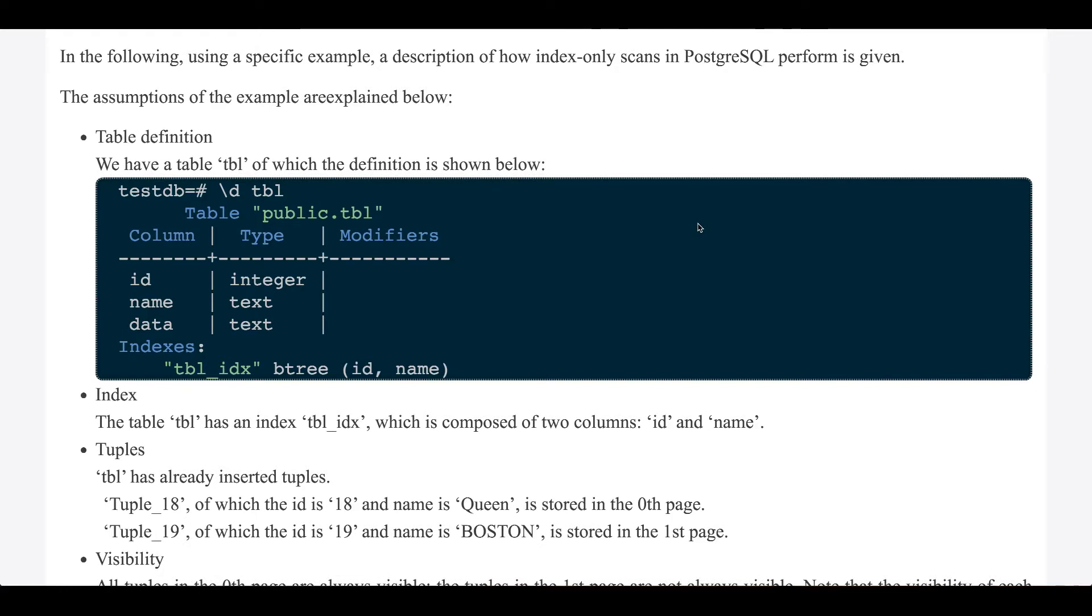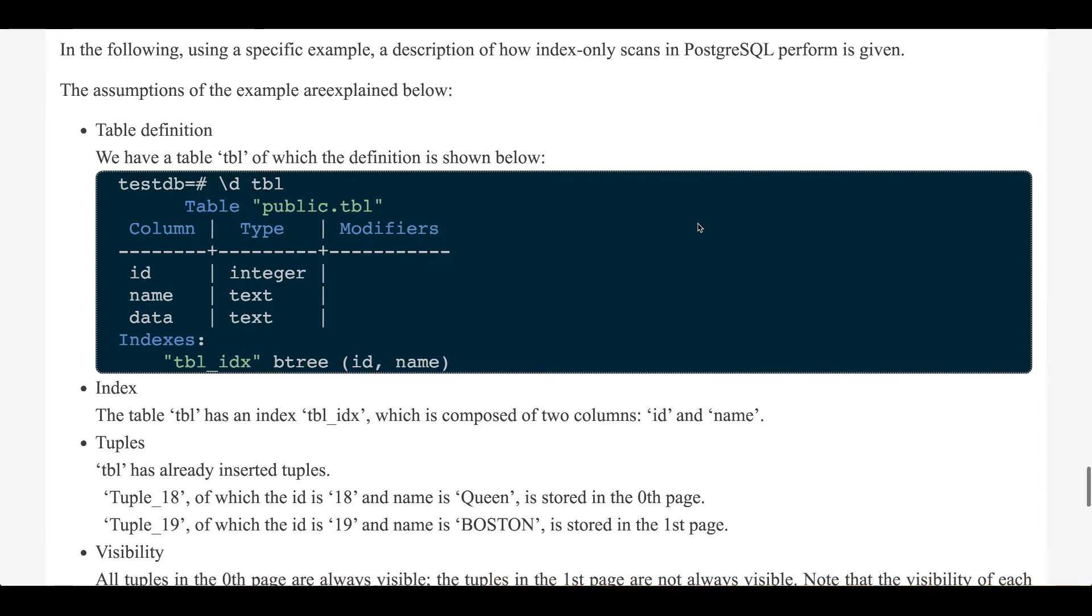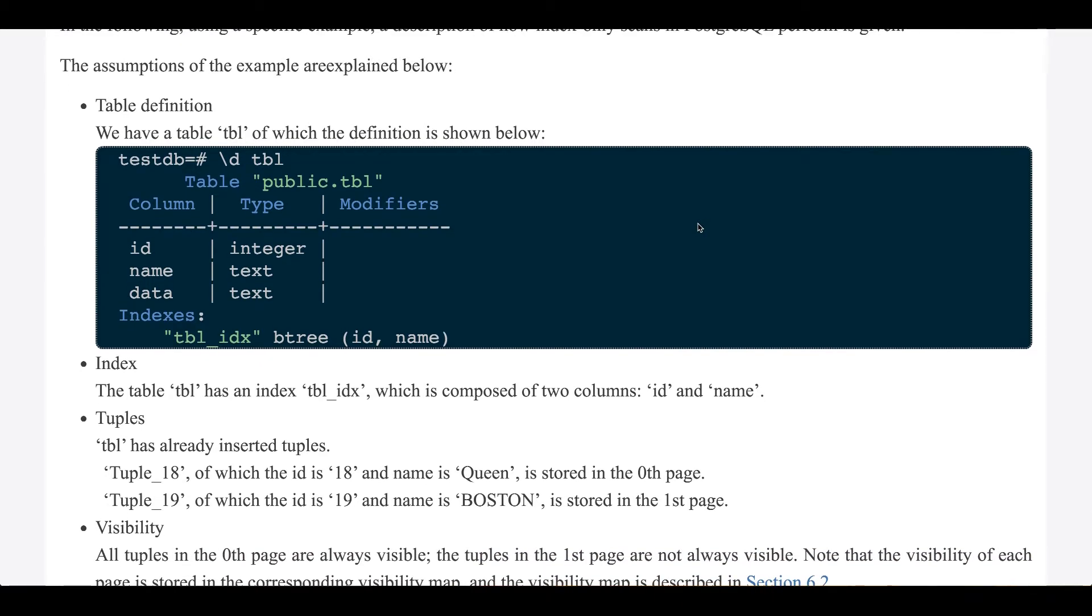In the following, using a specific example, a description of how index-only scans in Postgres perform is given. The assumptions of the example are explained below.